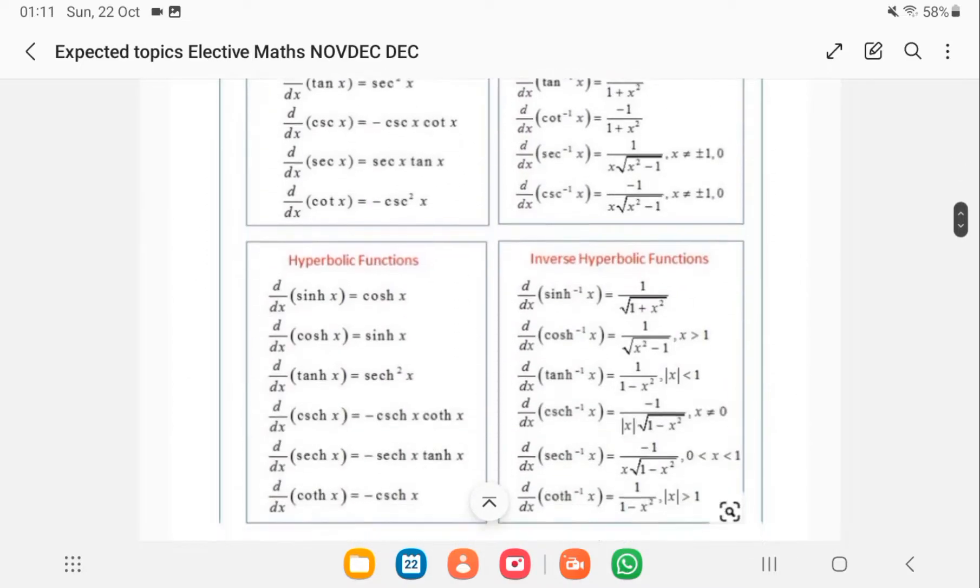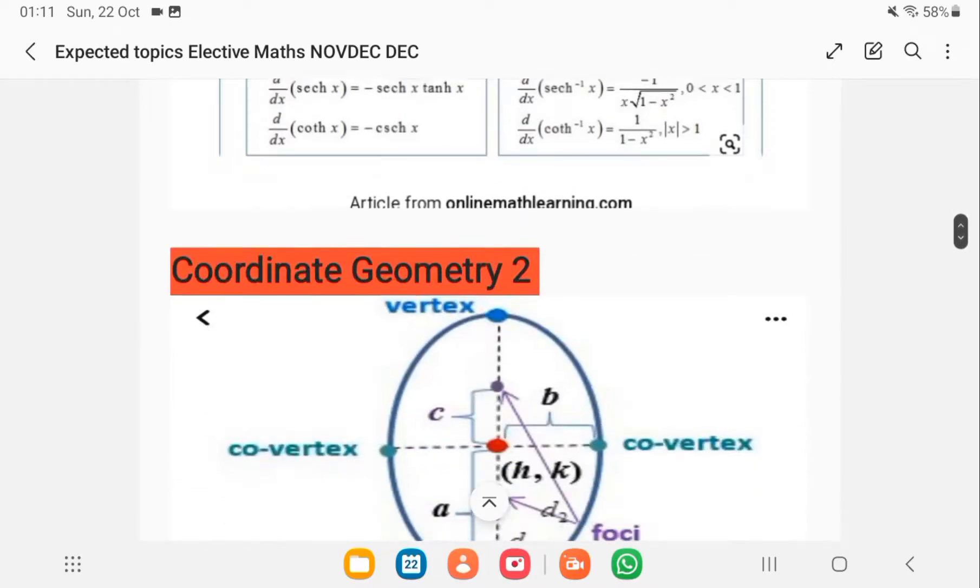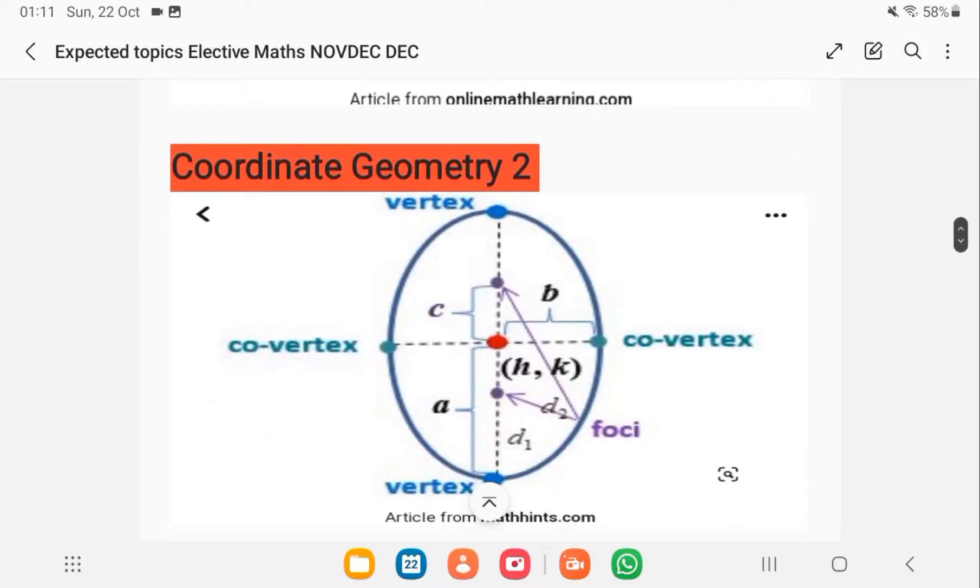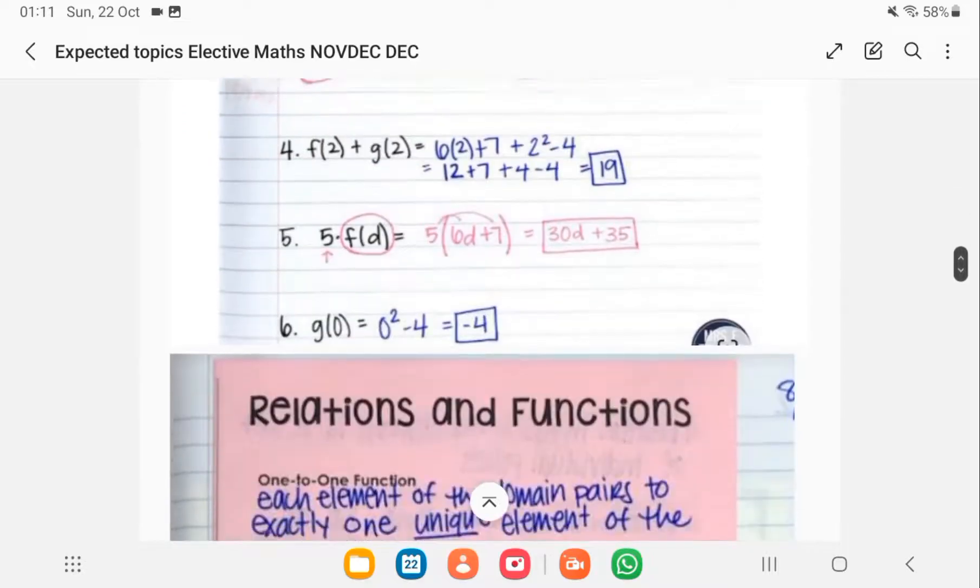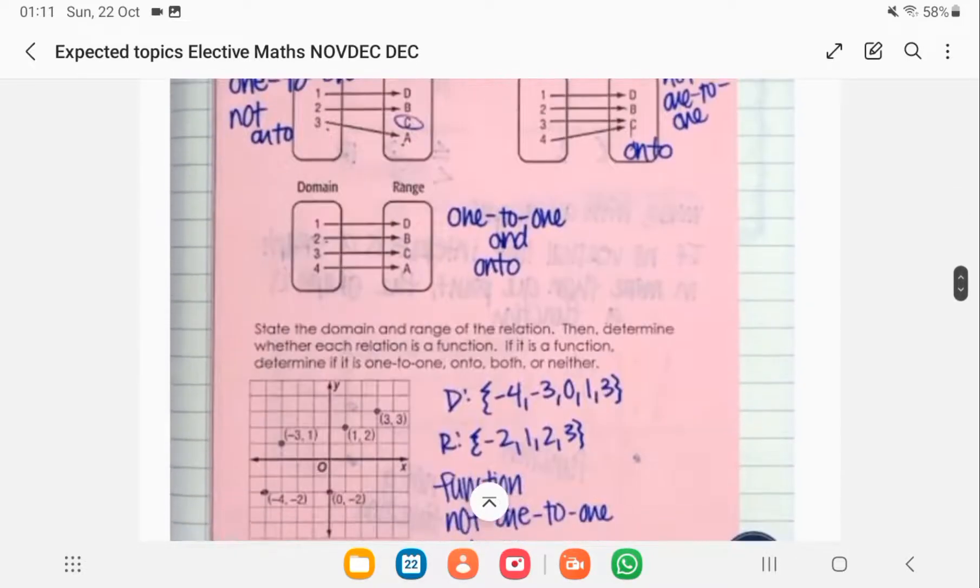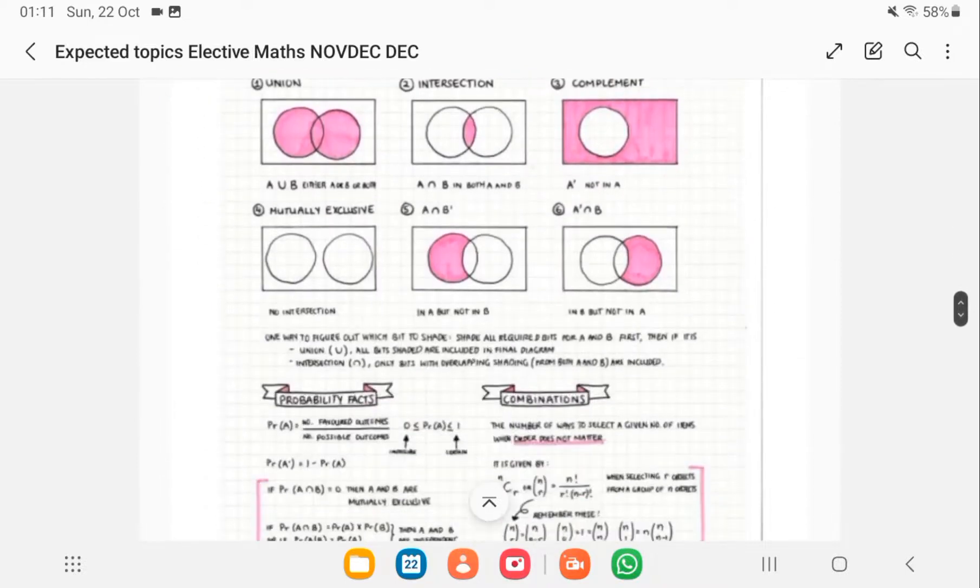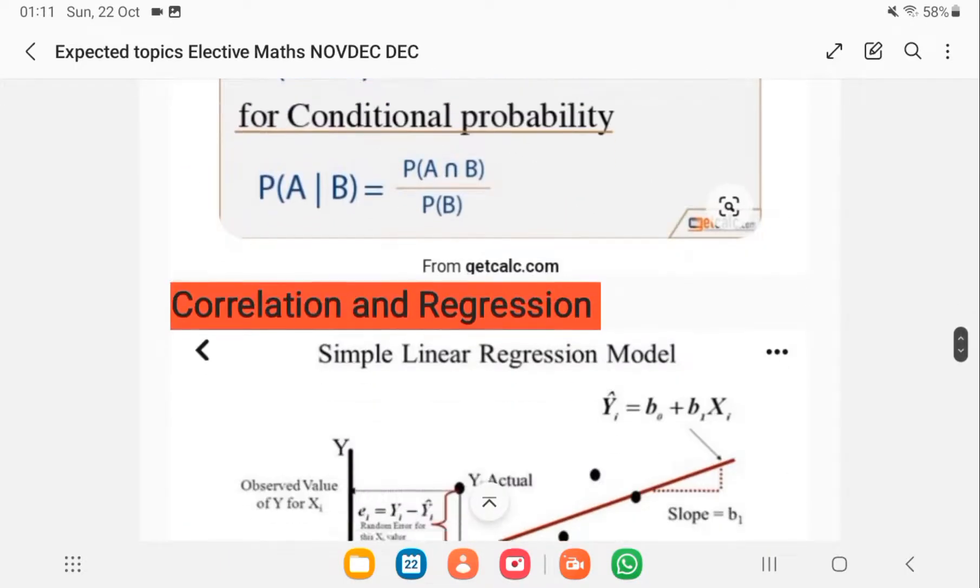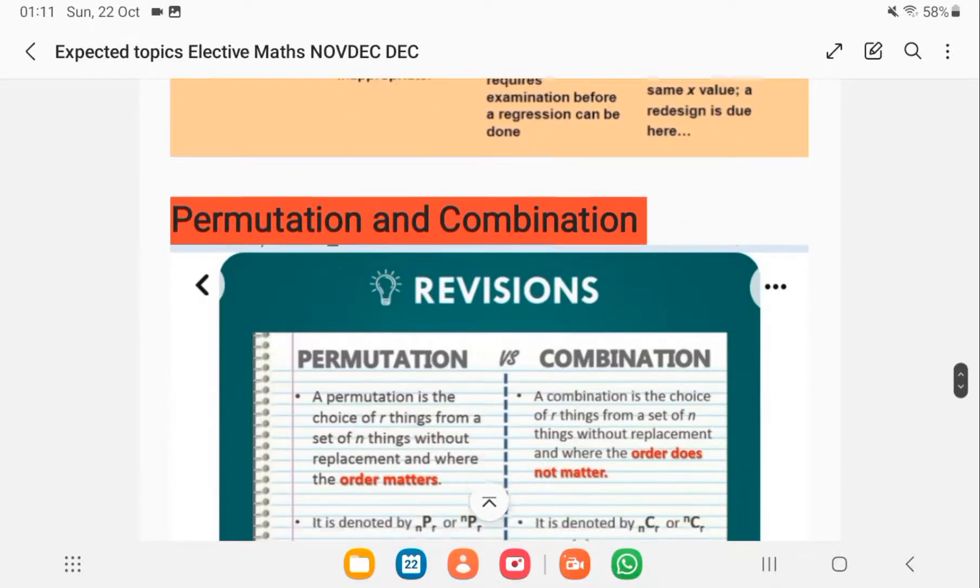Secondly, coordinate geometry 2, which has to do with circles. Then we move on to functions, so relation and functions. Then statistics and probability. Under statistics and probability you have correlation and regression, and then statistics itself. We also have permutation and combination.